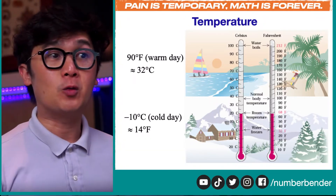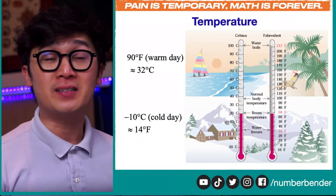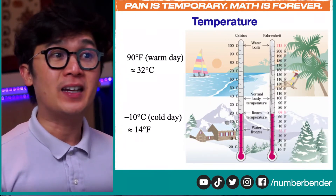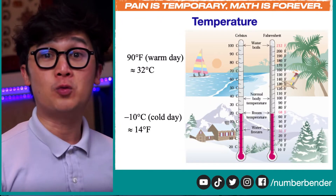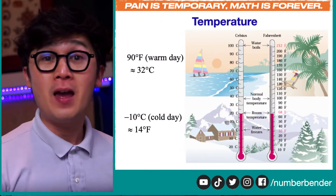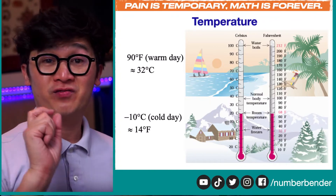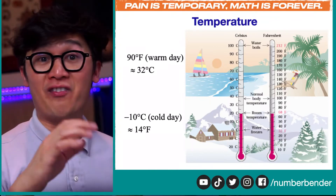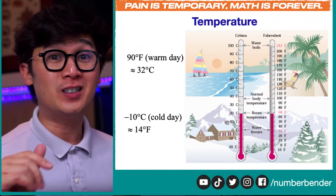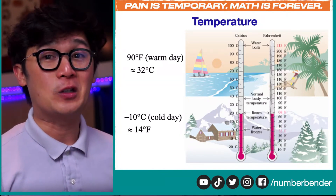Make sure you understand the differences in how temperature is read in different parts of the world. In the diagram you'll see that water boils at 100 degrees Celsius, but on Fahrenheit it's 212 degrees. So if you're using an oven, make sure you know whether it uses Celsius or Fahrenheit so you don't overcook or undercook whatever you're baking.